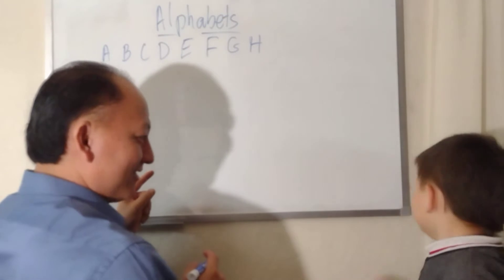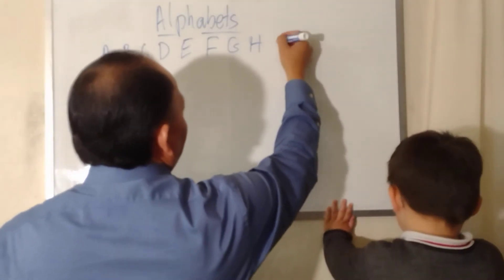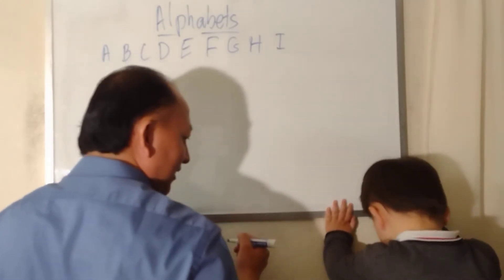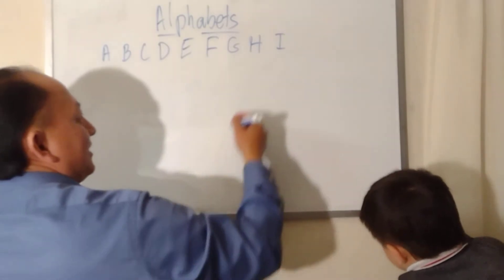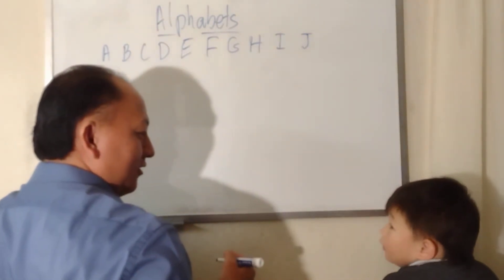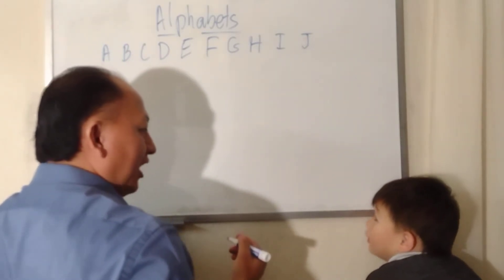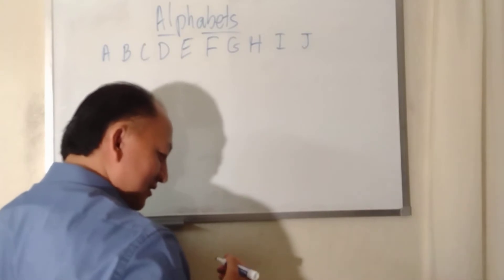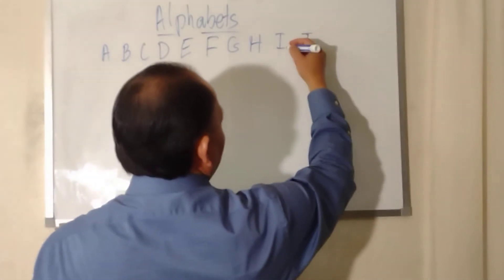Okay, I, ice cream. Yeah. J, what's J? You can say Jesus, John, Jane. Yeah. How about K? Cake, cake.